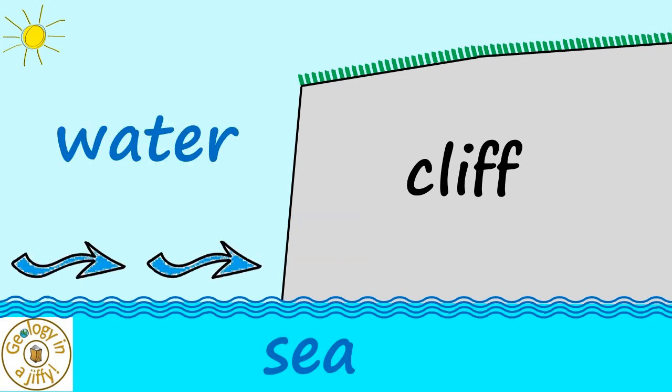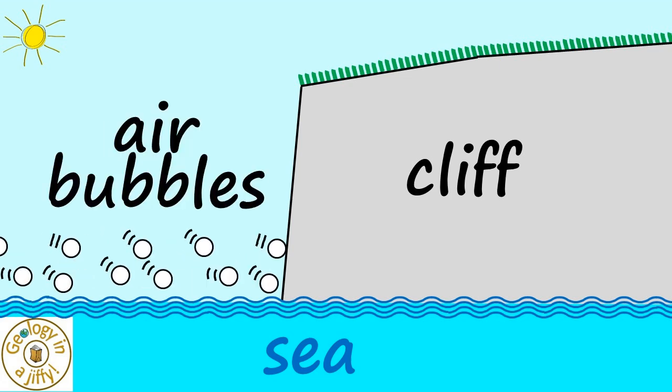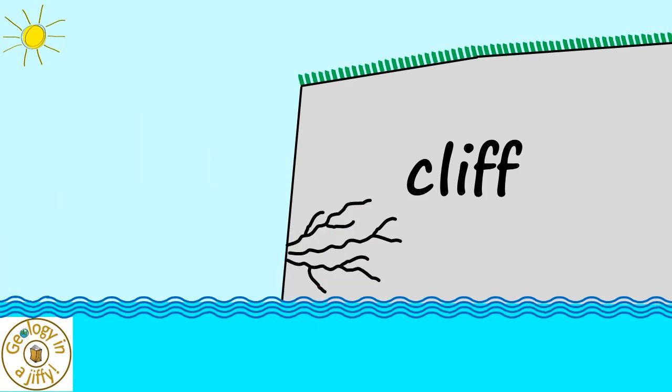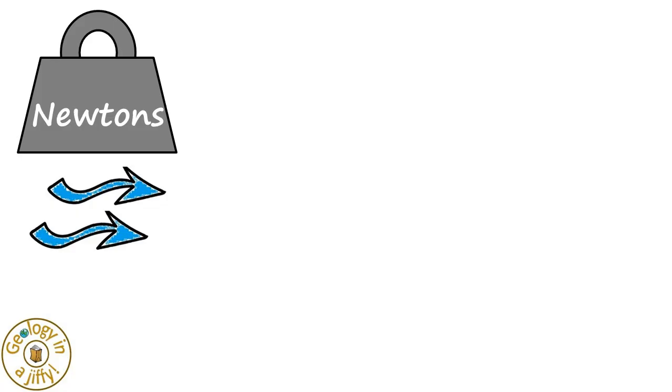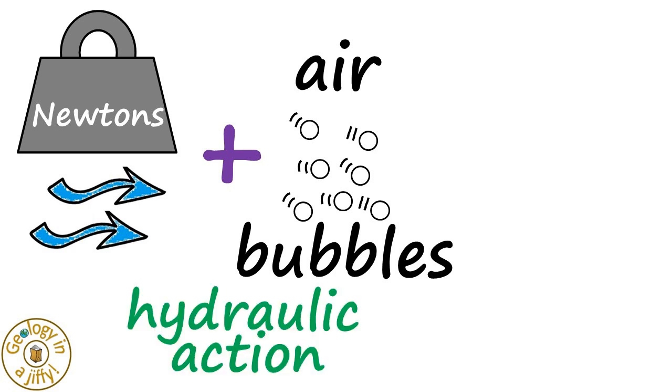It is not only water that hits the cliff face. Air trapped as bubbles and carried in the water also hits the rocks, causing erosion. This force of moving water combined with the bubbles of air it carries is called hydraulic action, which leads to erosion.